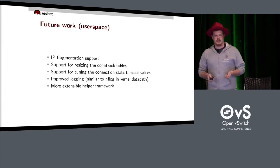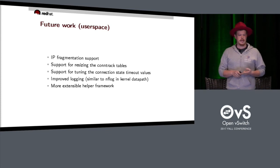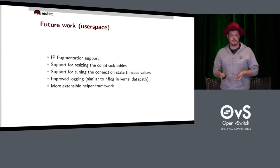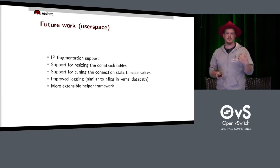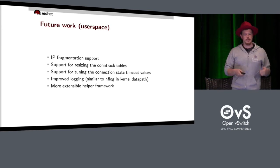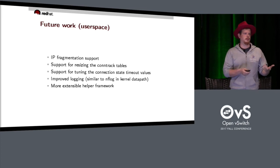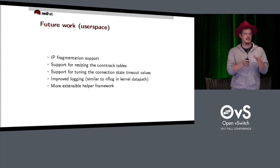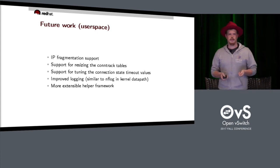Future work for the user space conntrack: IP fragmentation support would be very useful. Support for dynamically resizing the conntrack tables. Tuning connection state timeout values — things the kernel data path already has. Additional logging of events that the kernel's conntrack emits, to enable monitoring. And a more extensible helper framework — right now it's fixed in place. It would be nice to register five-tuples from inside the code for protocols like SIP using the ALG keyword.